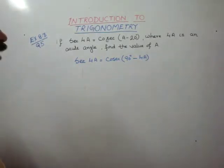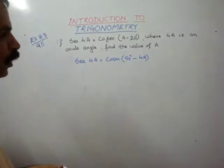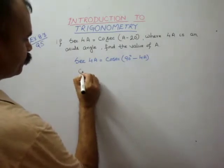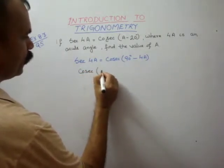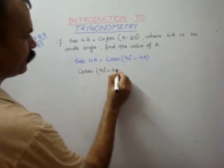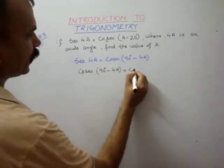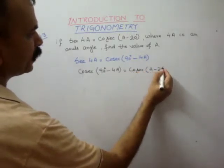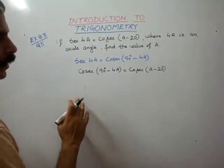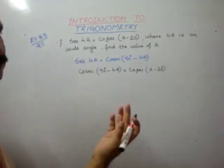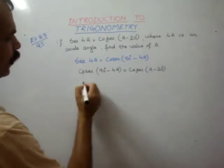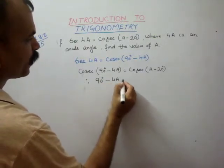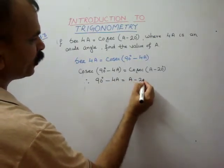We put this value in, so we get cosec(90 degrees minus 4A) is equal to cosec(A minus 20 degrees). These are acute angles, so therefore 90 degrees minus 4A is equal to A minus 20 degrees.